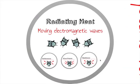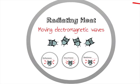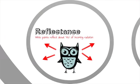Radiating heat consists of moving electromagnetic waves. There are three properties. The first is called reflectance — the amount of incoming radiation that bounces off a material without altering the temperature of the surface.